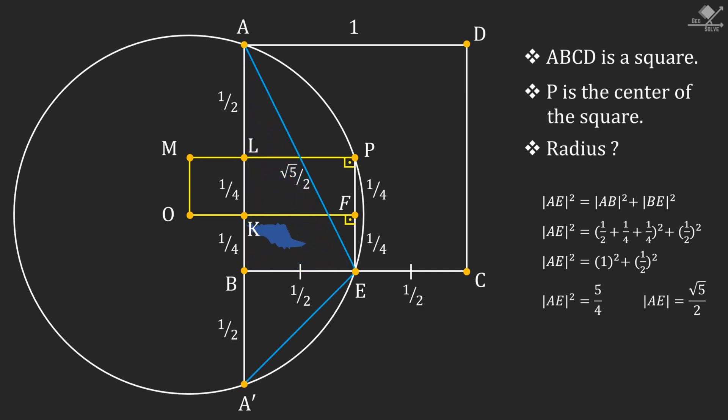And focus on triangle A'BE. You will see that this is a right-angled isosceles triangle with 45-degree base angles. Now let's draw these two line segments, which are the radius of the circle.